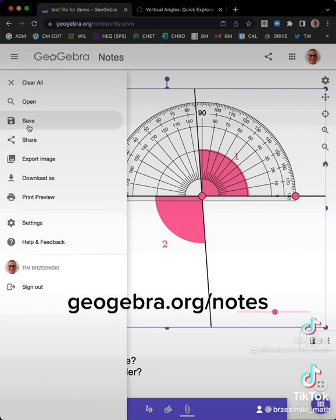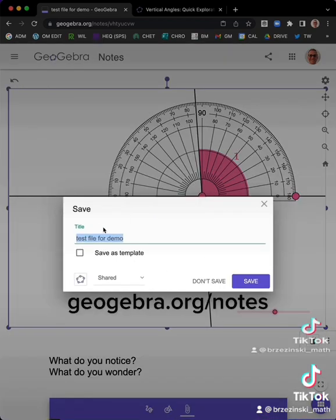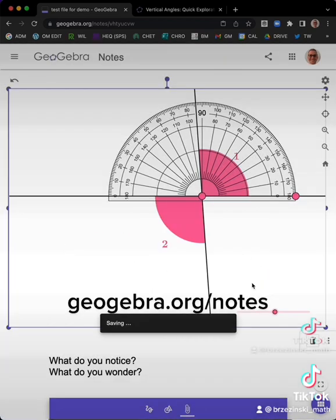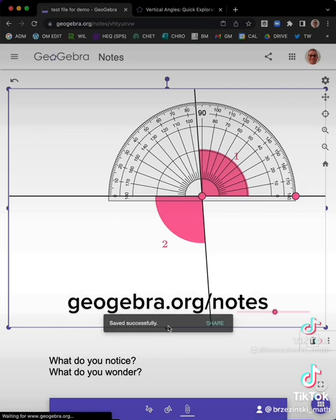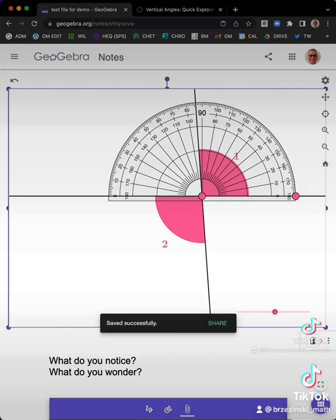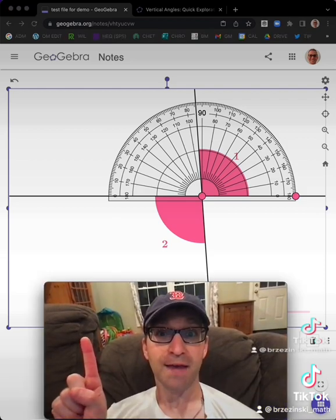But now look at this. If I go here and hit save in my notes file, I'll just give it that title right there. It says saving. It'll say save successfully. But here is the all-time cool part.